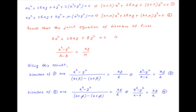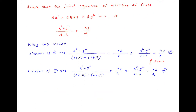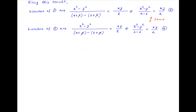Notice that equation 3 is the same as equation 4. Therefore, the bisectors of the two pairs of straight lines are the same.